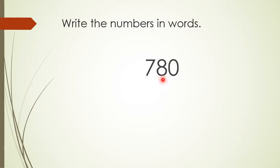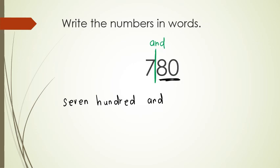Next: 7-8-0. Seven hundred and eighty. Again, we make a straight line — one digit, two digits, then the line — and put the word 'and.' So we write: seven hundred — H-U-N-D-R-E-D — and eighty. The answer is: seven hundred and eighty.